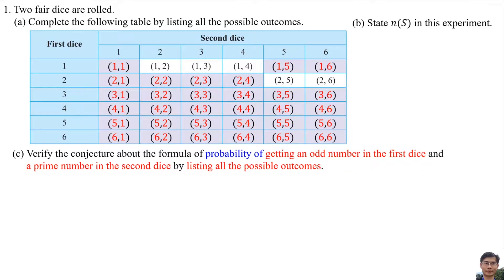Part B: State NS in this experiment. NS means the total number of all the possible outcomes. So NS is 6 times 6 equals 36.